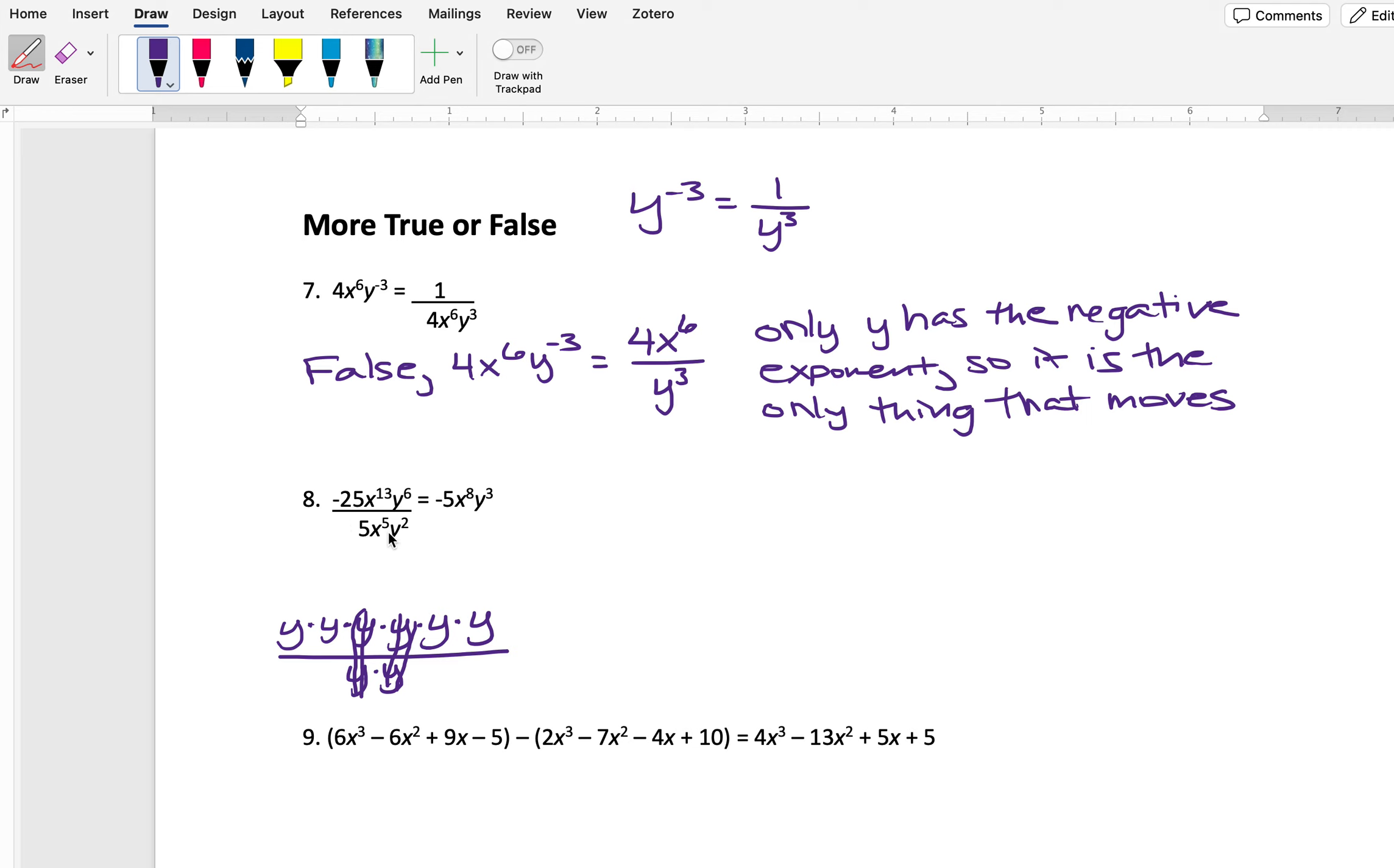So looking at this, the x's are going to cancel the same way. I have 13x's on top, I have 5x's on the bottom. 5 of the x's on the top are going to cancel with the x's on the bottom, and that's going to leave me with x to the 8th. The numbers here, negative 25 over 5, I'm just going to divide those out or simplify the fraction. So negative 25 over 5, that does equal negative 5. So we have negative 5. For the x's, we have x to the 8th, and for the y's, we have y to the 4th.